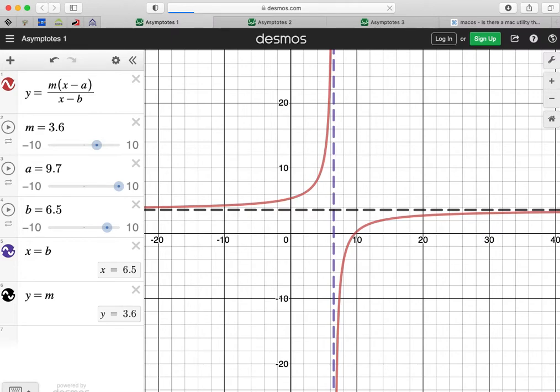So here's the first example. I've kept the sliders up on the left-hand side. If you look at the top left, the function that I've defined here is y equals m times (x minus a) over (x minus b). So we've got order 1 on the numerator and denominator, two linear functions.